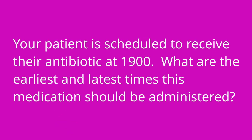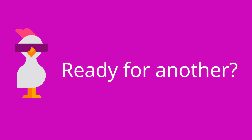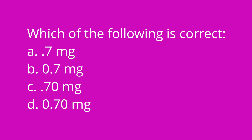It's quiz time! Question one: your patient is scheduled to receive their antibiotic at 1900 — what are the earliest and latest times this medication should be administered? The answer is 1830 and 1930, so up to 30 minutes before through 30 minutes after the scheduled time. Question two: what does BID mean? The answer is twice a day. Question three: which is correct — 0.7 mg, .7 mg, 0.70 mg, or .70 mg? The answer is 0.7 mg — you want the leading zero but not the trailing zero.